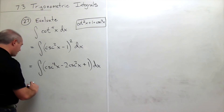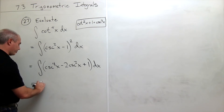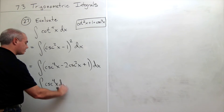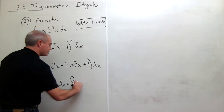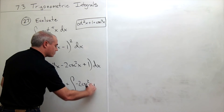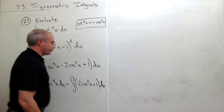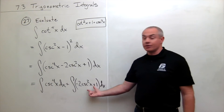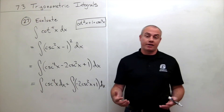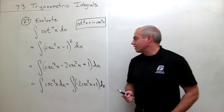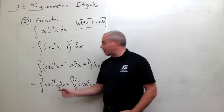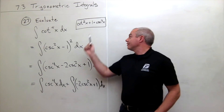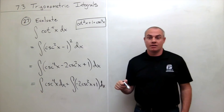What I'm going to do is split this into two integrals: the integral of cosecant to the fourth of x dx, plus the integral of negative two cosecant squared of x plus one dx. I'm splitting it so I have the integral I can't do yet separated from the one I can do. For the hard integral, I've got four cosecant x's multiplied together, and I'm going to take two of those and use the identity to change them back into cotangents.